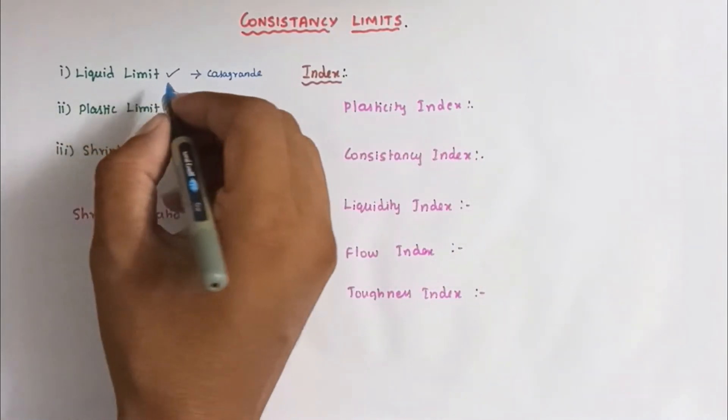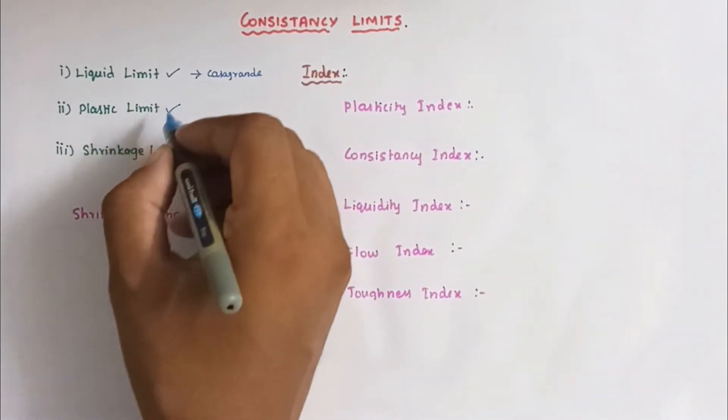The liquid limit is calculated by using Casagrande apparatus. We can use Casagrande apparatus to find out the liquid limit.